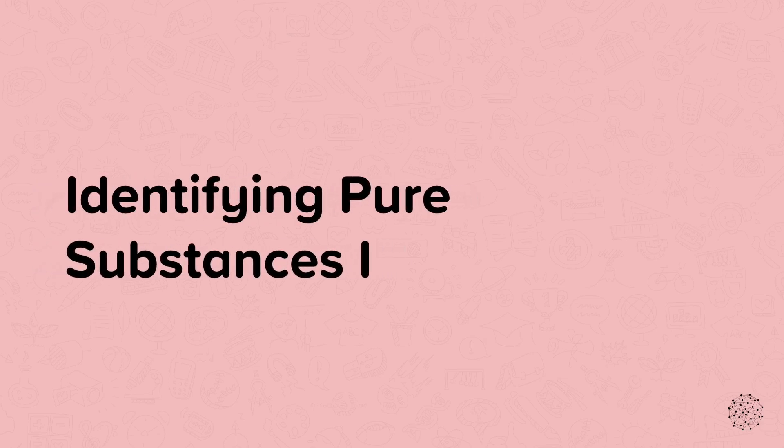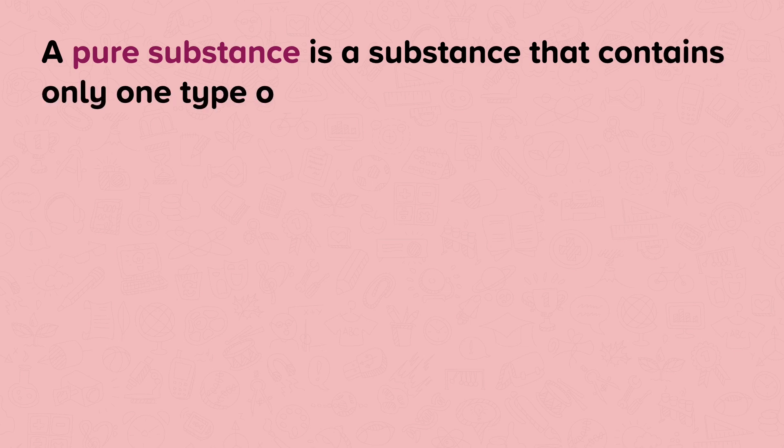In this nugget, we will look at identifying pure substances. A pure substance is a substance that contains only one type of compound or element.